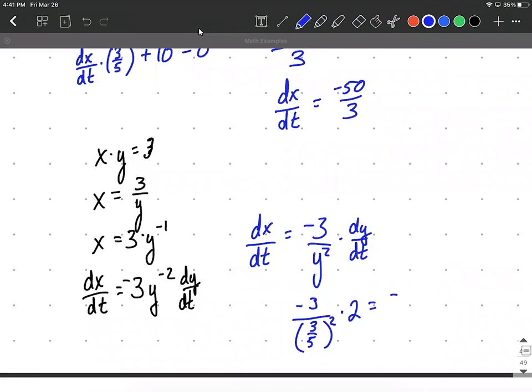So overall we can say negative 6, thinking of this as a fraction, multiply numerators, multiply denominators, over 9/25 as I square the 3 and I square the 5, which will equal negative 6 times 25 over 9, which eventually is going to reduce down to that negative 50/3.